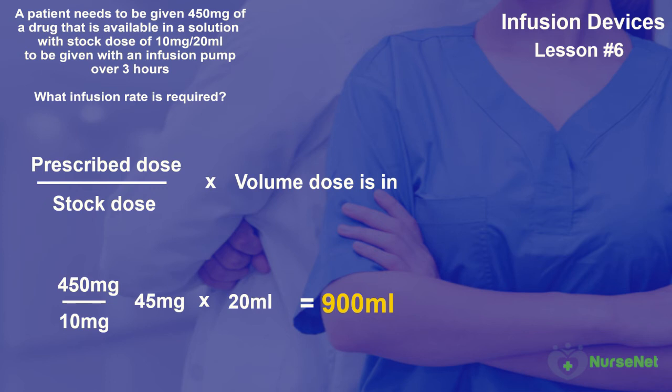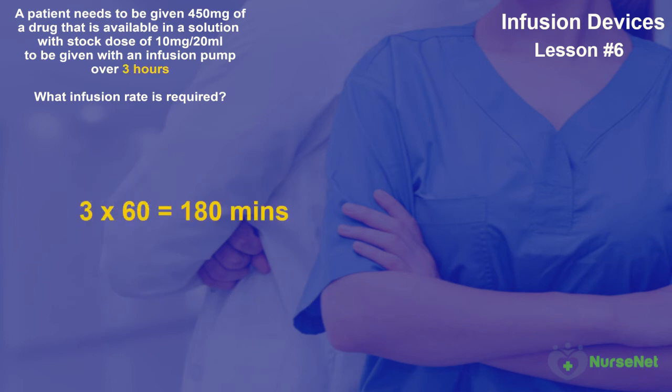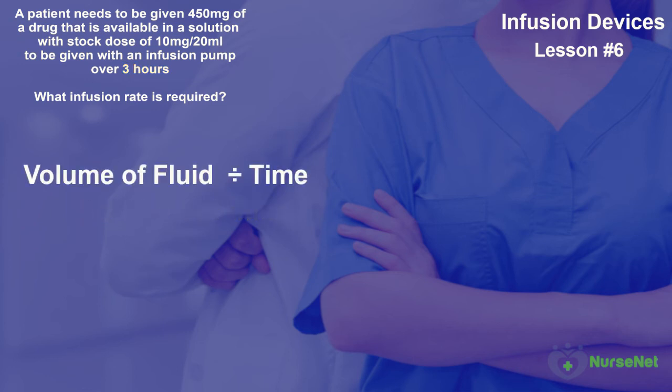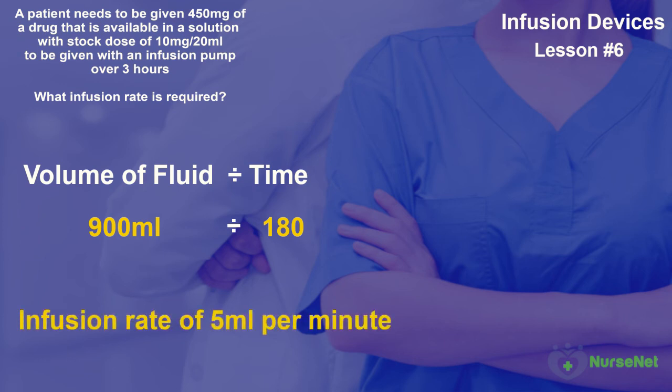The final element we need to do is to convert hours into minutes. So 3 multiplied by 60 gives us 180 minutes. Now we know the volume, we can crunch the numbers in our infusion rate formula. 900 millilitres of volume divided by the time of 180 minutes gives us an infusion rate of 5 millilitres per minute.